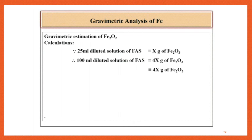Calculations: 25 ml diluted solution of FAS corresponds to X gram of Fe2O3. Therefore, 100 ml diluted solution of FAS corresponds to 4 times X gram of Fe2O3.